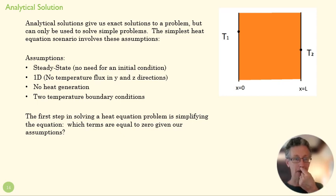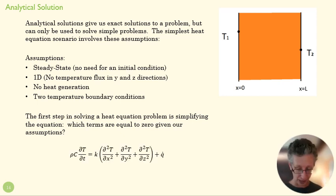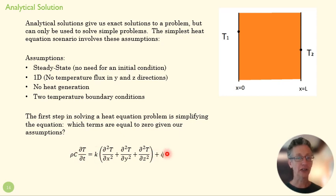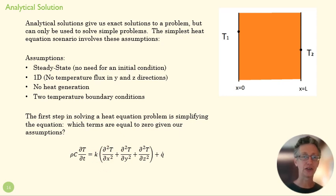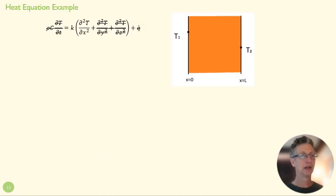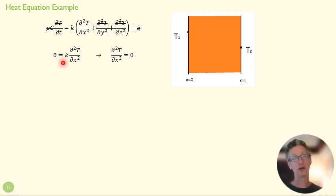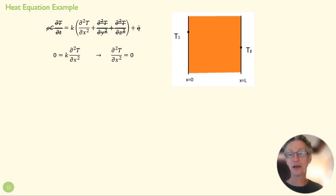The first step in solving this is to simplify our equation. Steady state means dT/dt is zero, so that whole term disappears. No heat generation, so that term disappears. Nothing in the Y or Z direction, so those two terms disappear. The only thing left is our diffusion term in the X direction. Dividing both sides by K, we end up with an equation that has an interesting physical discovery: the solution to this problem does not depend on K — K can be anything and we'll find the same solution.